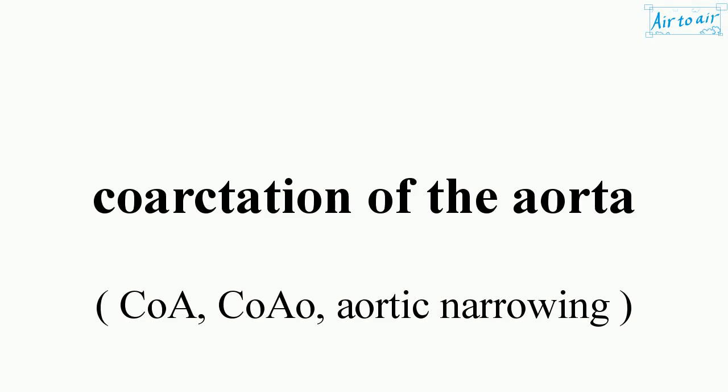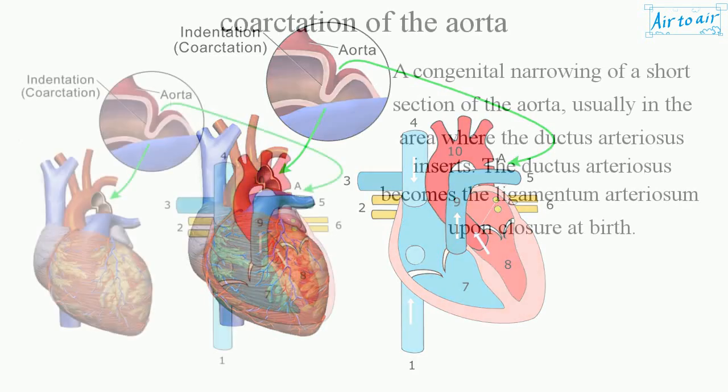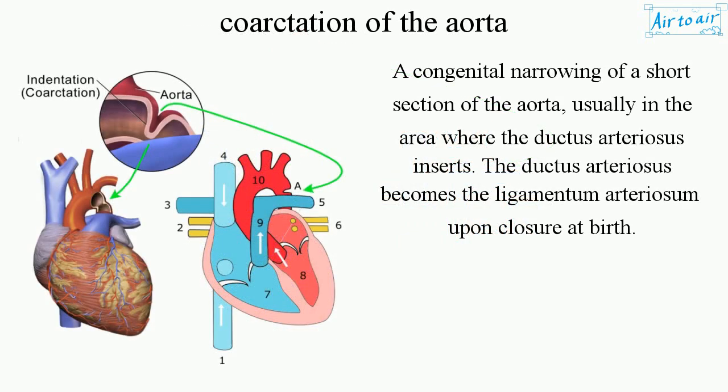Coarctation of the aorta is a congenital narrowing of a short section of the aorta, usually in the area where the ductus arteriosus inserts. The ductus arteriosus becomes the ligamentum arteriosum upon closure at birth.